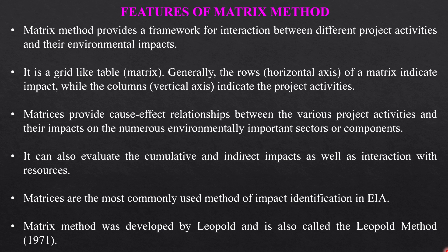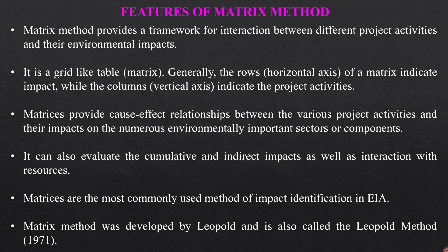Matrix method provides a framework for interaction between different project activities and their environmental impacts. It is a grid-like table called a matrix. Generally, the rows — the horizontal axis — indicate impact, while the columns — the vertical axis — indicate the project activities. Matrices provide a cost-effective relationship between various project activities and their impact on numerous environmentally important sectors or components. It can also evaluate cumulative and indirect impacts as well as interaction with resources. Matrix is the most commonly used method for impact identification in EIA, and the matrix method was developed by Leopold — it is called the Leopold method.